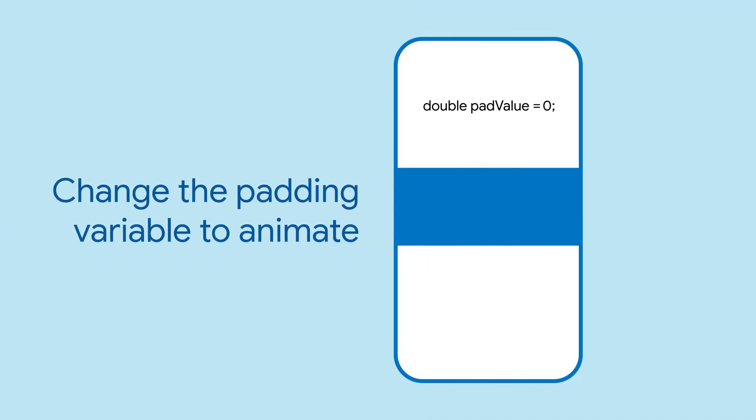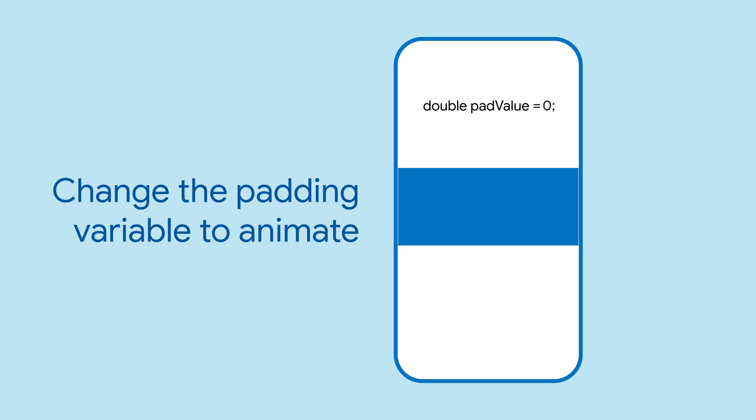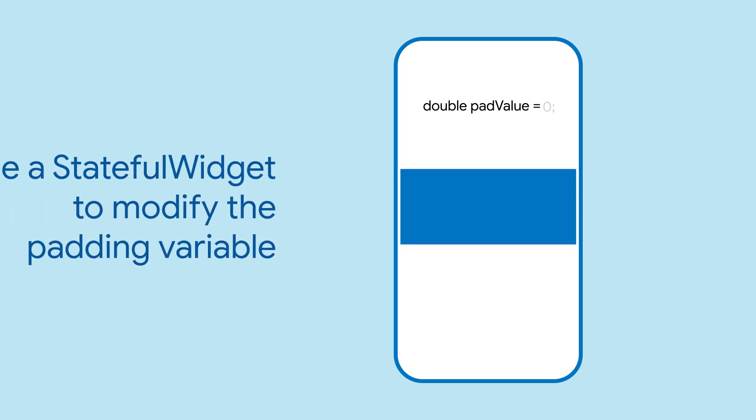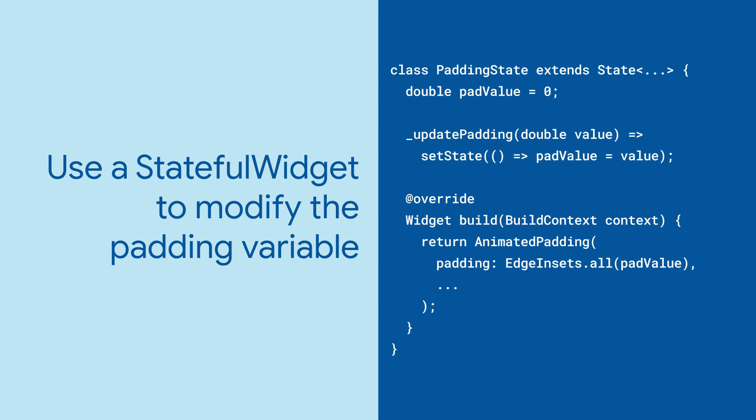Now, whenever the padding variable changes, the padding will animate. Try using a stateful widget to control the value of the padding variable.